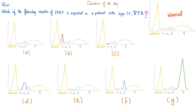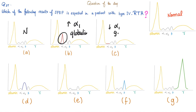Here is the normal serum protein electrophoresis and these are your choices. A is normal. B has increased alpha-1 globulin. We have albumin and then the globulins — four subtypes: alpha-1, alpha-2, beta, and gamma. C has low alpha-1 globulin. Choice D has increased alpha-2 globulin. Choice E has decreased alpha-2 globulin. F is increased beta globulin. G is increased gamma globulin.